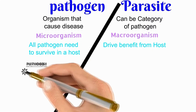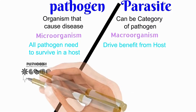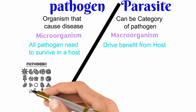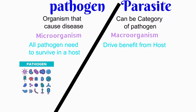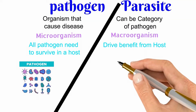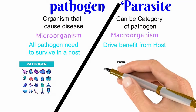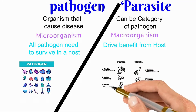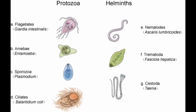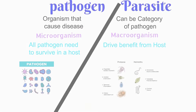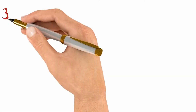Here we can see the various types of pathogens: amoeba, viruses, and bacteria. On the other hand, we have parasite types: protozoa, helminths, amoeba, flagellates, sporozoa, ciliates, etc.